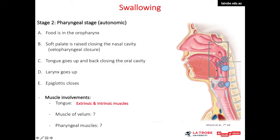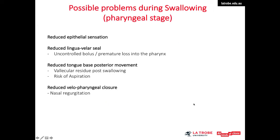For these to occur, the extrinsic and intrinsic muscles of the tongue perform their role. The tensor veli palatini, levator veli palatini, and muscular uvulae work to elevate the soft palate or velum. The middle and inferior constrictors constrict, pushing food down toward the esophagus. Possible problems at this stage include reduced epithelial sensation, reduced linguovelar seal leading to premature loss of the bolus into the pharynx, reduced tongue-base posterior movement increasing aspiration risk, and reduced velopharyngeal closure causing nasal regurgitation.